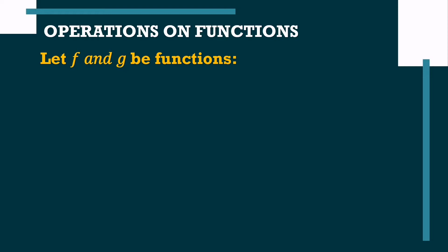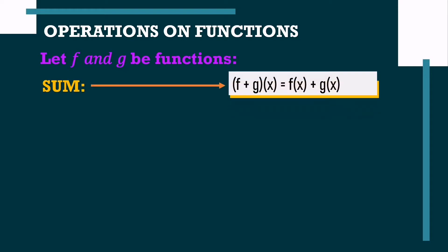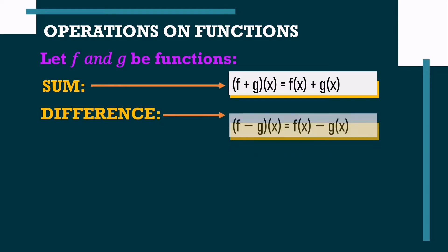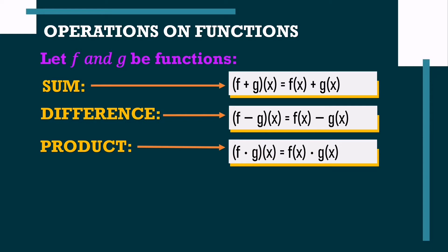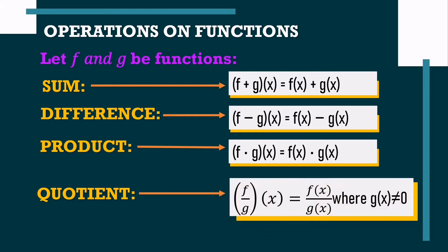So, let f and g be functions. The notation for their sum is: f plus g of x is equal to f of x plus g of x. For their difference, f minus g of x is equal to f of x minus g of x. For their product, f times g of x is equal to f of x times g of x. And for their quotient, f divided by g of x is equal to f of x divided by g of x, where g of x must not be equal to 0.